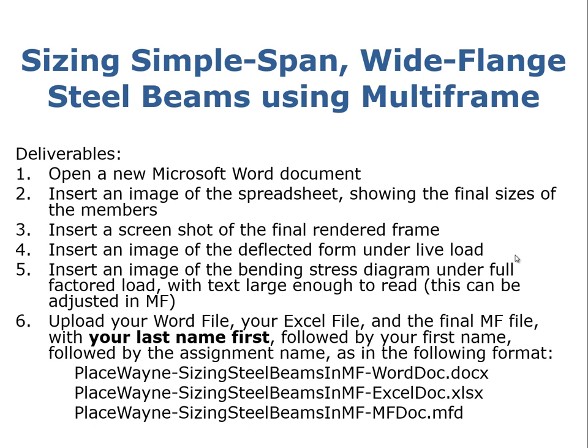In other words, you're going to put in an image of your entire spreadsheet as it looks after the entire process is complete. From Multiframe, you will extract a rendered frame image and insert that in Microsoft Word document. You will also create an image of the deflected form under live load and insert that into the Word document. And finally, you'll insert an image of the bending stress diagram under full factored load. And you want to do that with text that's large enough to read, which is adjustable in Multiframe. Don't create some little teeny image that's a small part of the field of view. Your responsibility is to make a legible image internal to the Word document. If you capture an image and it's some tiny little thing that's not readable and you insert it into the Word, you might as well not bother doing that because if it's not legible and readable, then it won't count.